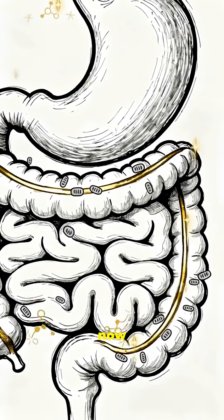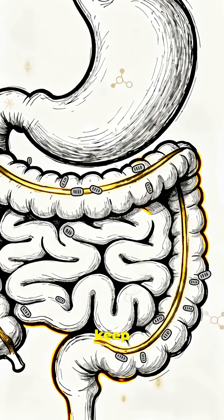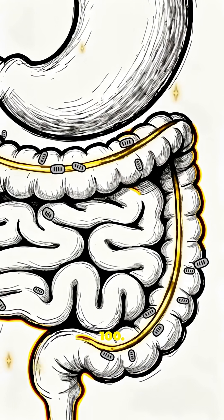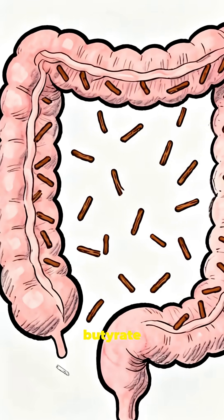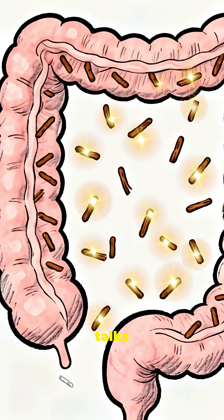There's a molecule living inside you right now, one that scientists keep finding inside people who live past 100. It's called butyrate, and almost nobody talks about it.